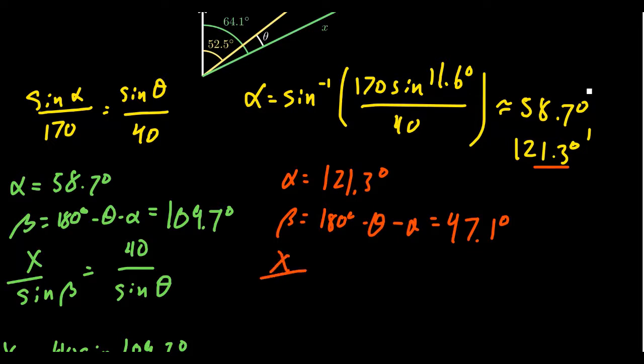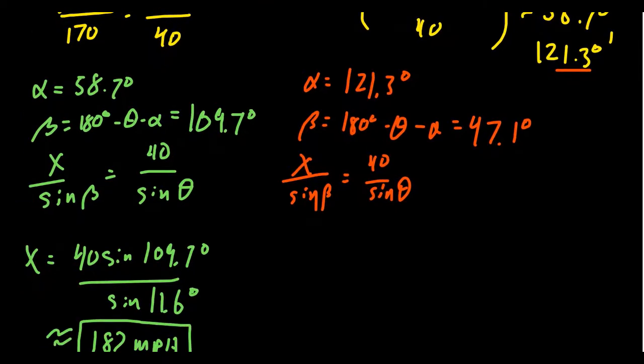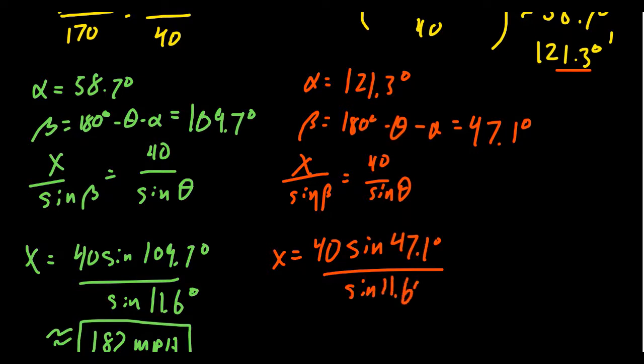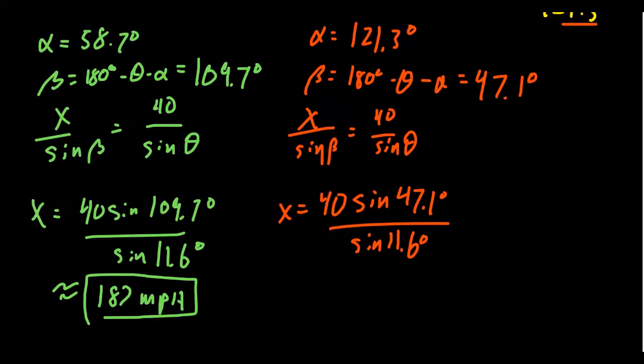Once we get beta, we're still going to do the law of sines. So x over sine beta is equal to 40 over sine theta. Solving for x, you still get x equals 40 times sine of beta. Beta, of course, is different this time. Beta is going to be a lot smaller, so you get 47.1 degrees. And then this is going to sit over sine of 11.6 as well. Use your calculator. Again, make sure you're in degree mode. And this time, you're going to get 146 miles per hour. So the ground speed is much smaller that time.